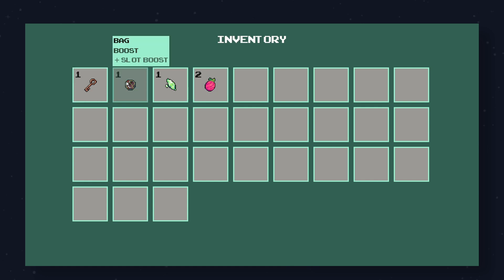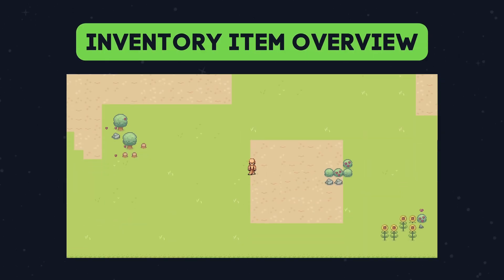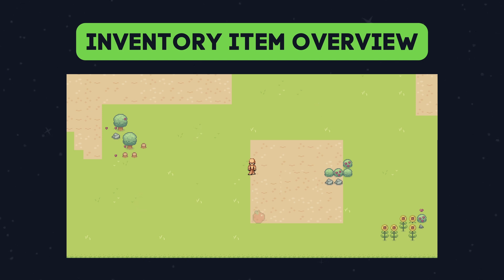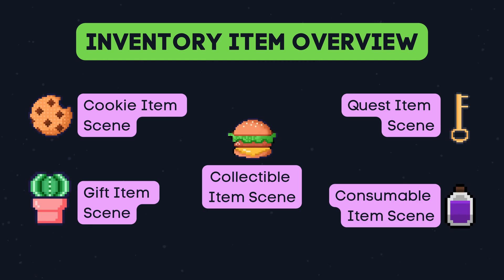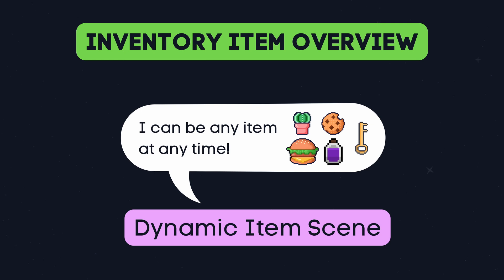Our player will then interact with this item and add it to their inventory. Because we don't want to spawn our item and have it always be, for example, an apple, we'll need to design our item component to be a reusable and configurable node, so that we can handle various items in our game without the need of creating a different scene for each different item. So instead of having a different scene for item apple, item pear, and item potion, we'll just have a singular scene which can be either an apple, a pear, or a potion on demand. This means that even if we have a thousand items, we can instance them and create all of them from one singular scene.